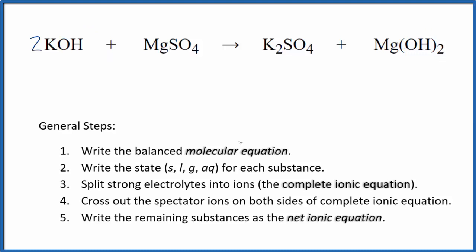Now we can balance the net ionic equation. And to do that, we need to write the state for each substance. That looks like this. Potassium hydroxide, that's a strong base. So it's going to be aqueous. Magnesium sulfate, in general sulfates are soluble. So we have a soluble magnesium sulfate and the potassium sulfate also soluble. Magnesium hydroxide.